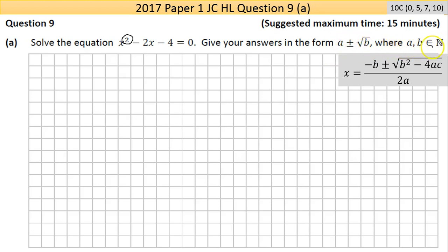You could try the other faster method of opening up two brackets and putting it equal to zero, but it's not going to work because they're giving you this hint here. That form means you need to use a plus or minus b, which is basically this formula.